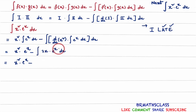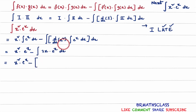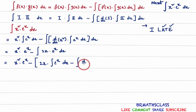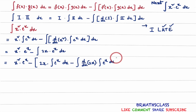You can observe: one is the algebraic function, another is the exponential function. As per the ILATE rule, algebraic function is the first function and exponential function is the second function — it is in the right order only. Apply integration by parts formula: first function 2x into integral of second function, minus derivative of first function into integral of second function e power x. And finally, I will write dx for this integral.